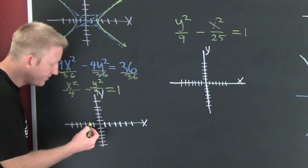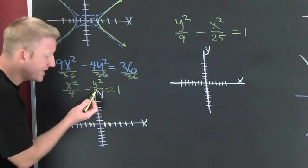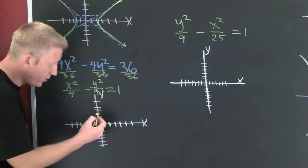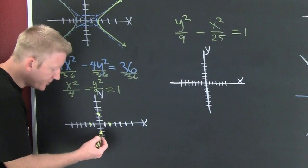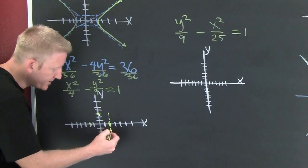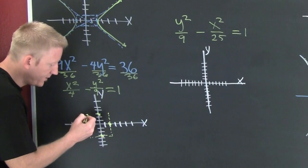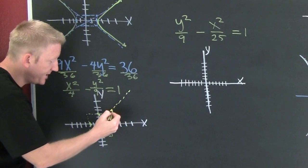That's the square of three, so I'm going to go up three and down three. Then I'm going to make a box, then I'm going to connect and extend the diagonals of that box.